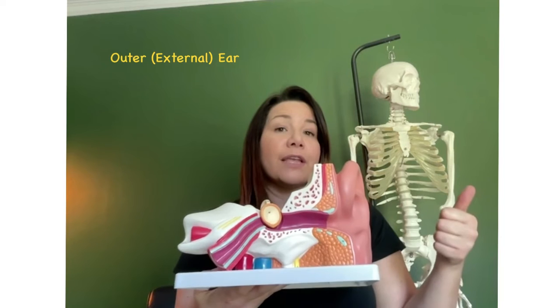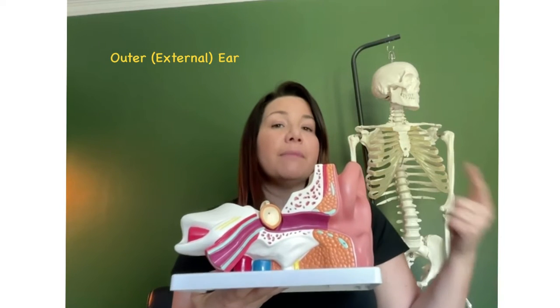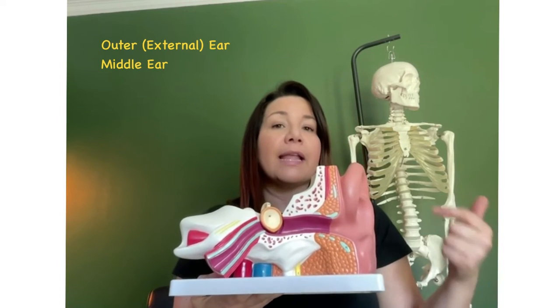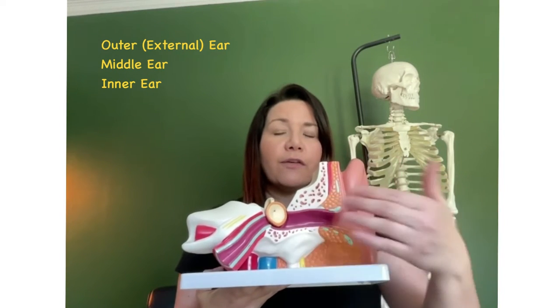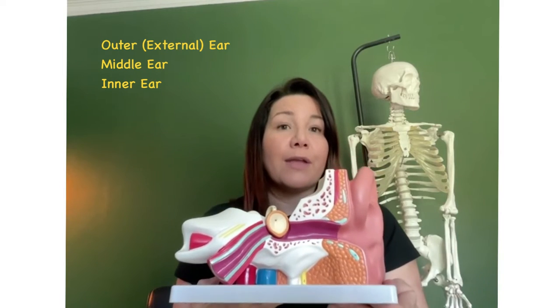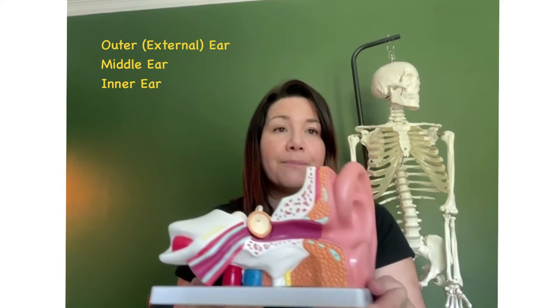Now the ear is separated into three main parts: the outer ear, the middle ear, and the inner ear. So let's go through each different part of the ear and what we find there.